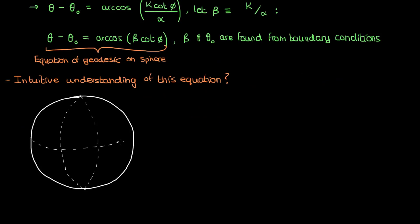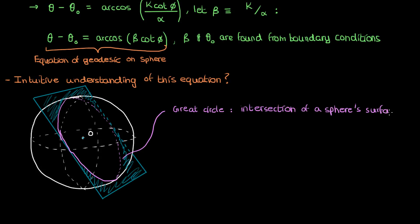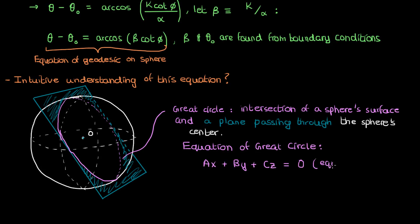Suppose I took my sphere again — the same one we found the geodesic on. The center of the sphere is the origin O, and suppose that in addition to the sphere, I had a plane which passed through the center of the sphere at O. You can imagine that if you have this plane and pass it through the center of the sphere, the intersection of this plane and the surface of the sphere is going to be a circle. This circle is called the great circle. A great circle is the intersection of a sphere and a plane passing through its center. Let's find the equation representing this great circle. The equation of a plane passing through the origin is just ax plus by plus cz equals zero.